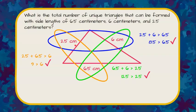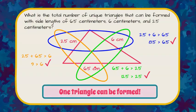So because we are given specific side lengths then we only can form one unique triangle.